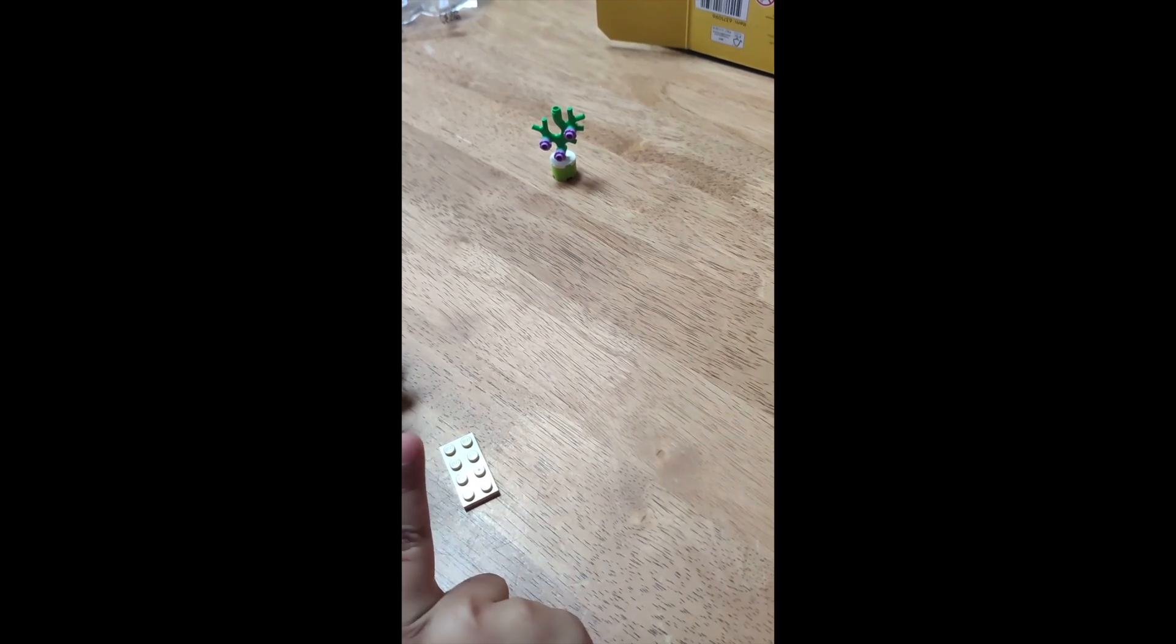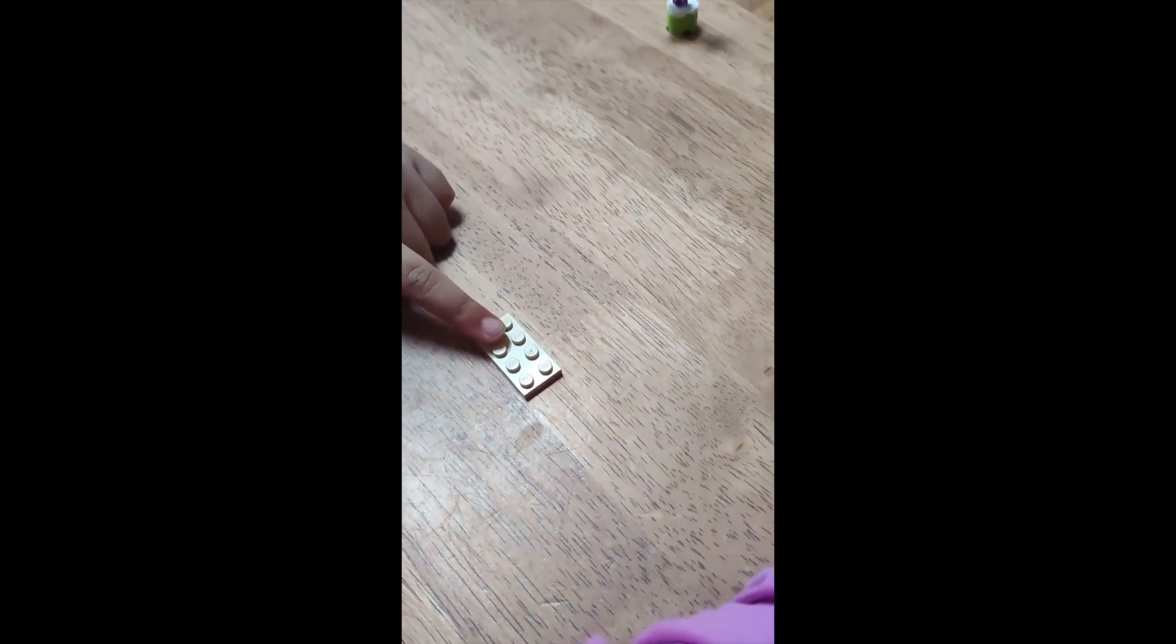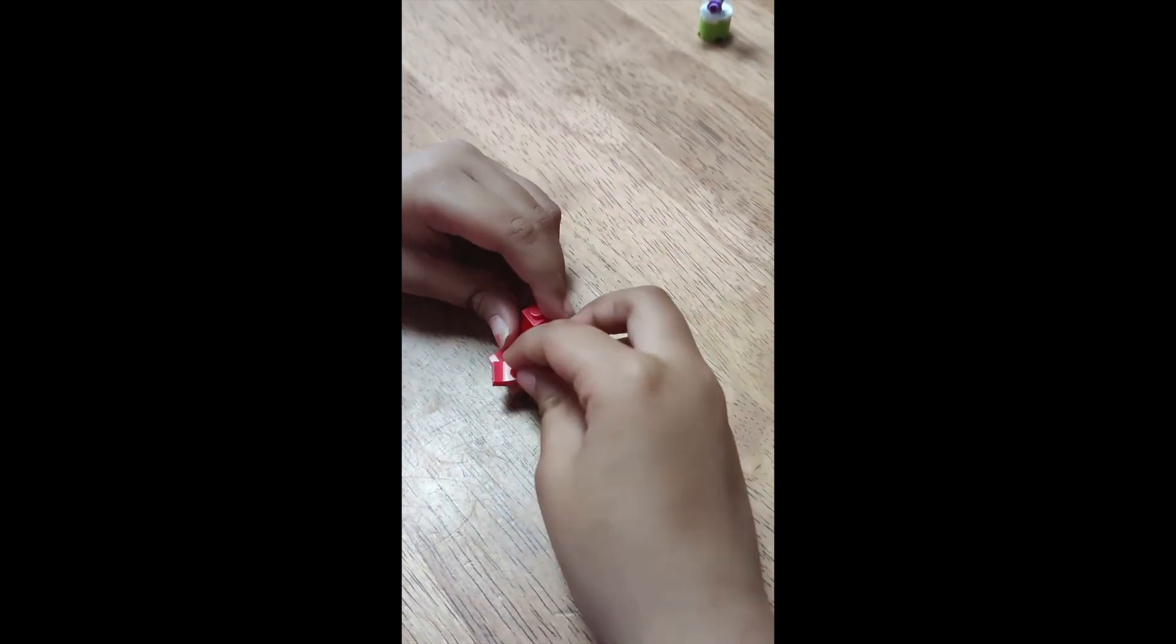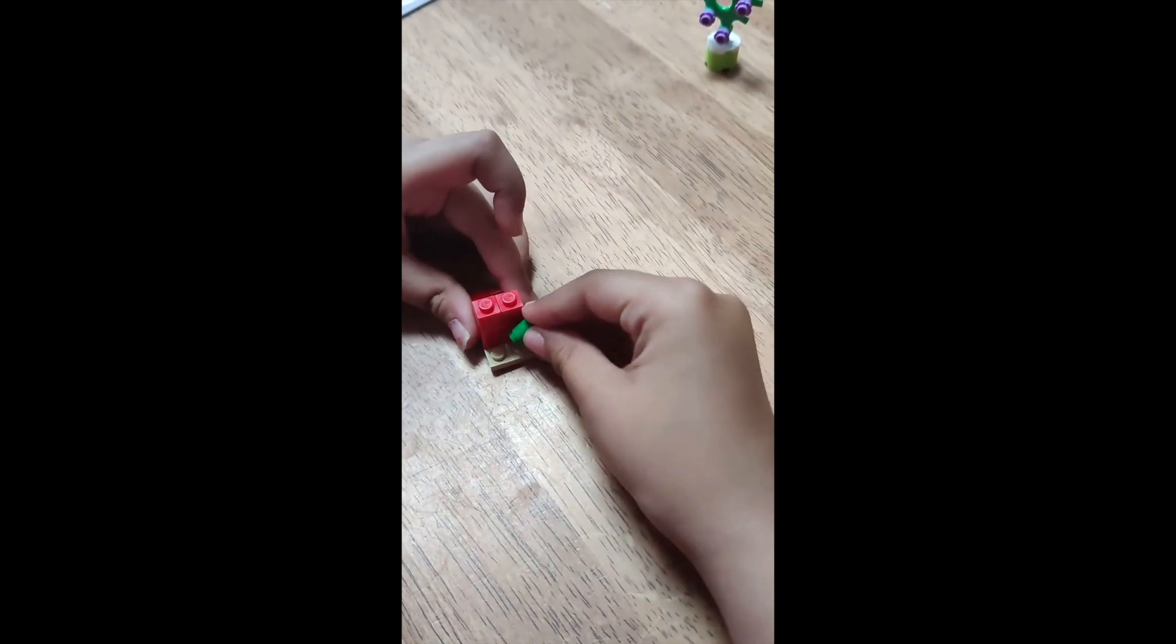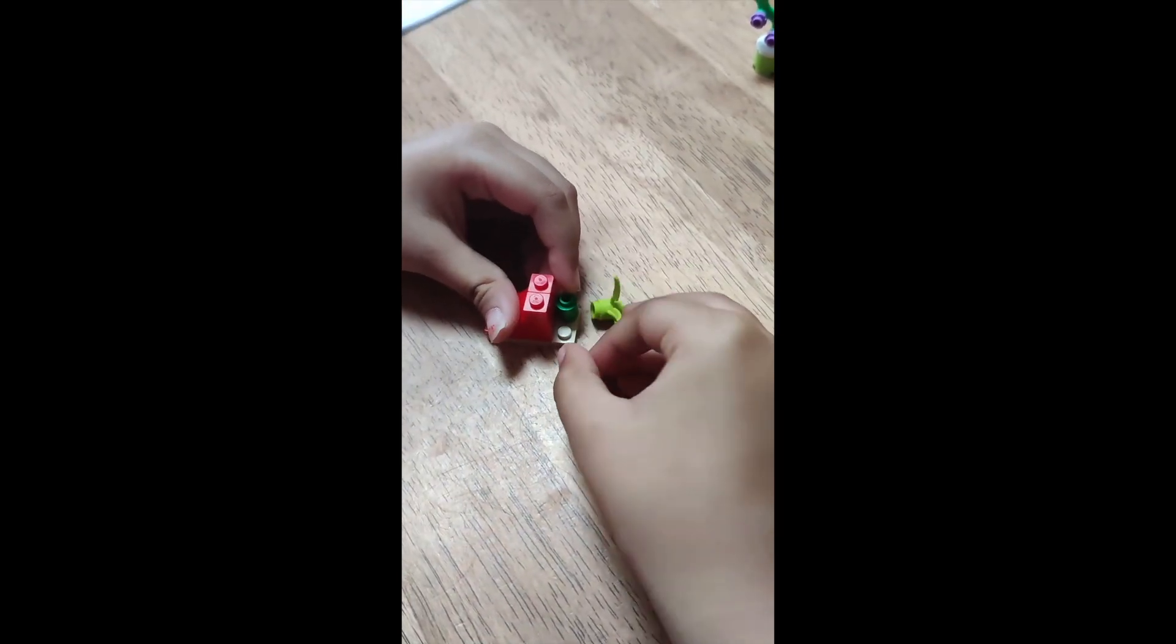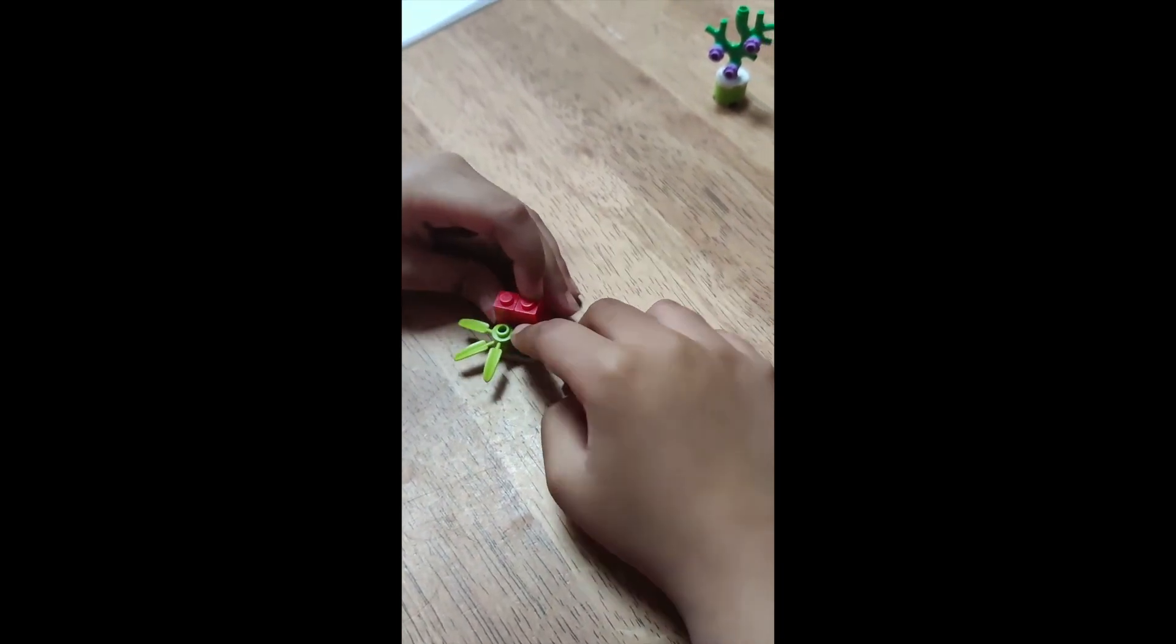First we start with this plain peach piece, then these two red pieces on each side. Then we are going to have one of this green and one of this light green plant. This is a light green plant and this is a light green bottle.